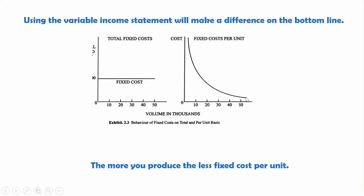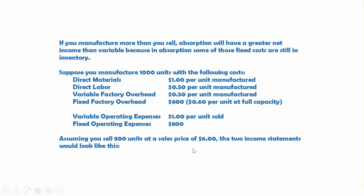We'll have a sample problem where we're manufacturing 1,000 units and only selling 800 units. Our costs: direct materials are $1 per unit, direct labor is $0.50 per unit, variable factory overhead is $0.50 per unit, and fixed factory overhead is $600 — which, manufacturing 1,000 units at full capacity, is $0.60 per unit. Variable operating expenses are $1 per unit, and fixed operating expenses are $800. We sell 800 units at a sales price of $6.